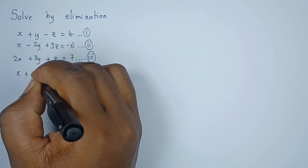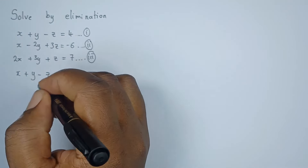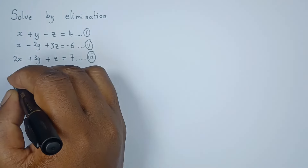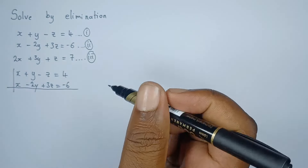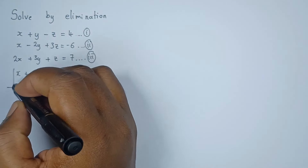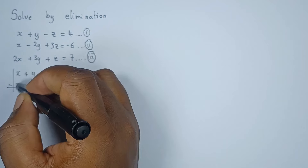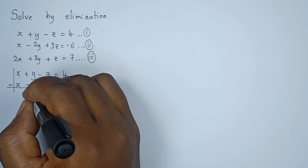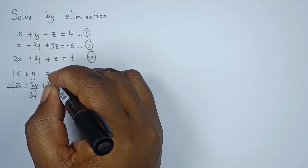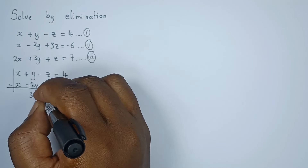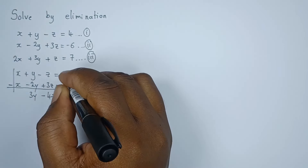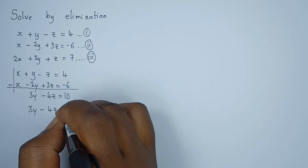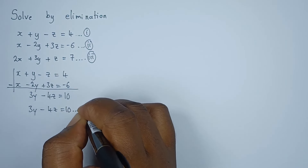Equation one is x plus y minus z equals four. Equation two is x minus two y plus three z equals negative six. Since x has the same sign in both, I can subtract: x minus x gives zero, eliminating x. y minus negative two y gives positive three y, and negative z minus three z gives negative four z. On the right side, four minus negative six gives positive ten. So we get 3y minus 4z equals ten. Let's call this equation four.